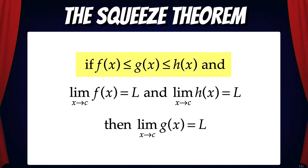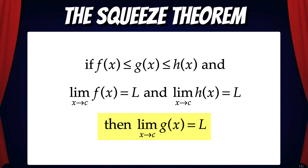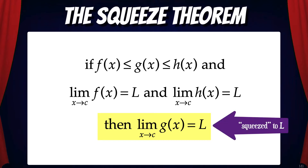If f(x) ≤ g(x) ≤ h(x), and the limit of f(x) as x approaches c equals L, and the limit of h(x) as x approaches c equals L, then the limit of g(x) as x approaches c also equals L. Because g(x) is always between f(x) and h(x), it's as if the limit of g(x) as x approaches c is squeezed to L.